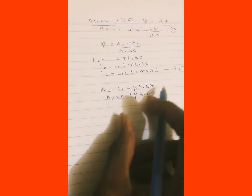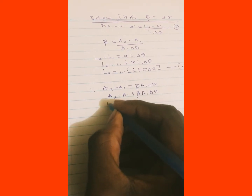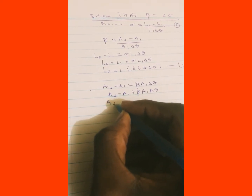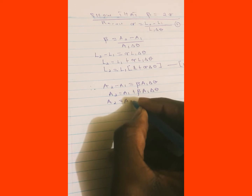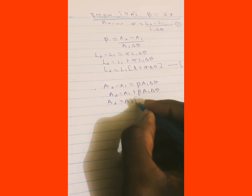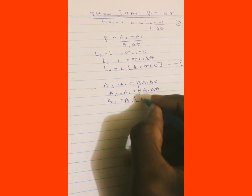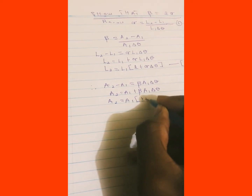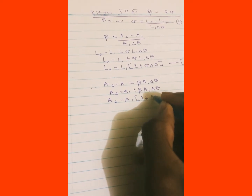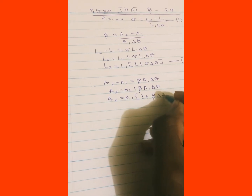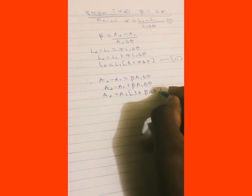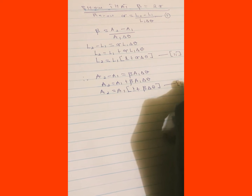Now we factor out A1, and we have A2 equals A1 times the quantity 1 plus beta times the change in temperature. This we can call equation 3.